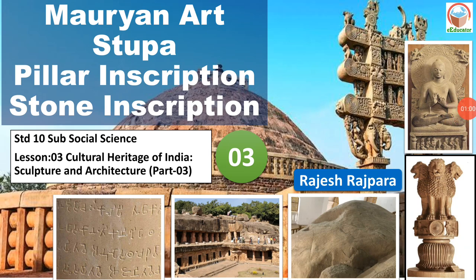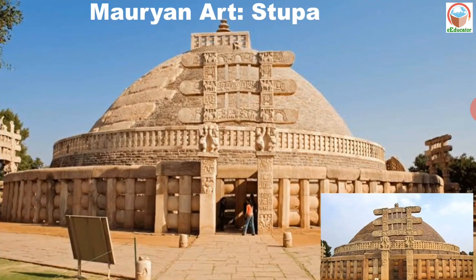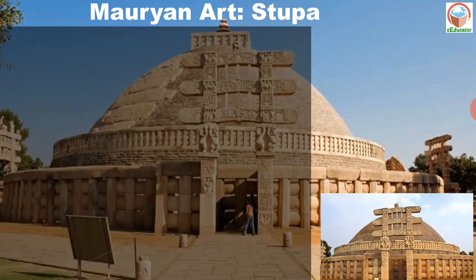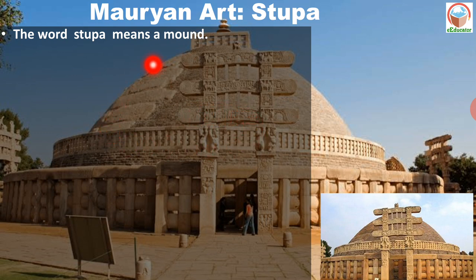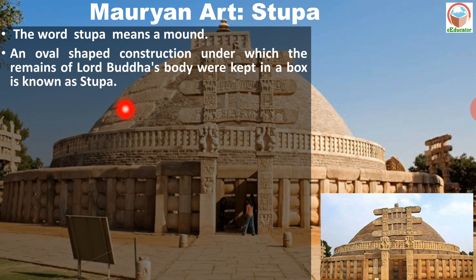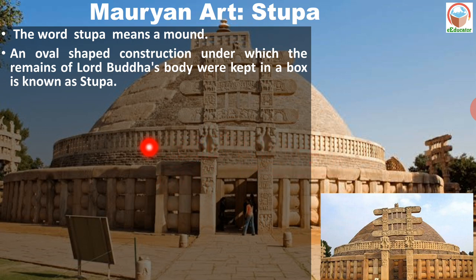Let us start the topic. Mauryan Art — Stupa. Let us first understand what is a Stupa. The word Stupa means mound. A Stupa is an oval-shaped construction under which the remains of Lord Buddha's body were kept in a box.